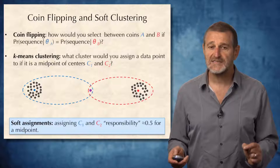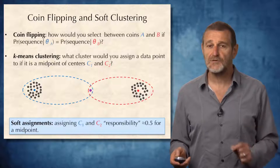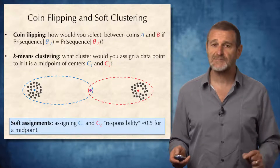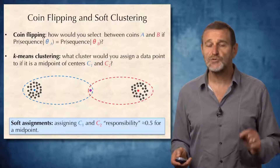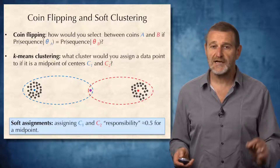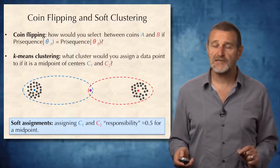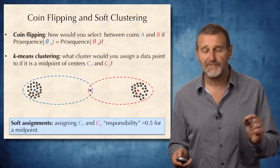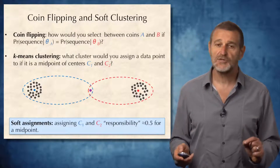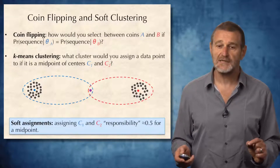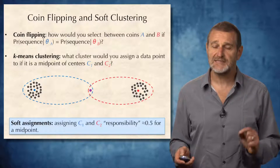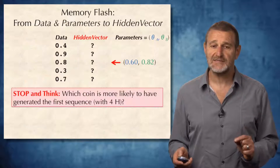But in soft assignments, we saw that there is yet another possibility: to assign 50% of a point to the blue cluster and 50% to the red cluster. But how do we assign these responsibilities?